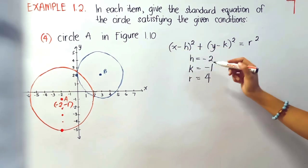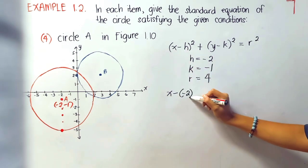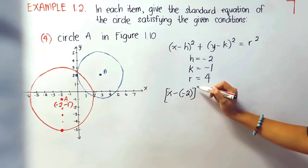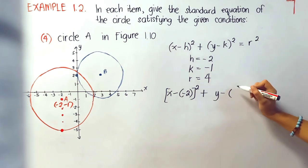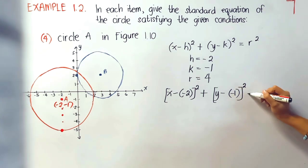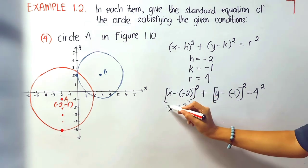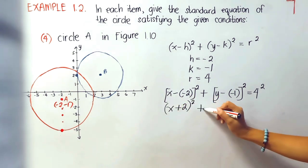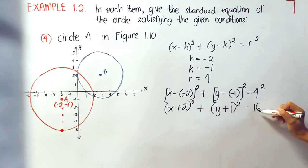Let us now substitute the values. x minus our h is negative 2 quantity squared plus y minus our k is negative 1 quantity squared equals r is 4, 4 squared. Again, negative times negative is positive, so this will be x plus 2 quantity squared, y plus 1 quantity squared equals 16. And this is our final answer.